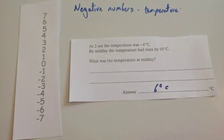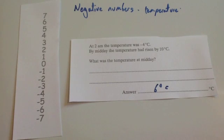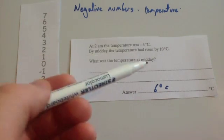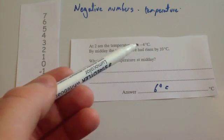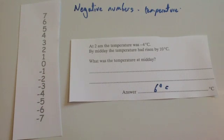If you're not very confident with your negative numbers, there's no reason why you can't draw a number line or a thermometer in the exam to help you. It's really up to yourself — anything to make sure you get the question right. As you do lots of them, they become really easy. Some people would just say minus four plus ten is six and know that straight away.